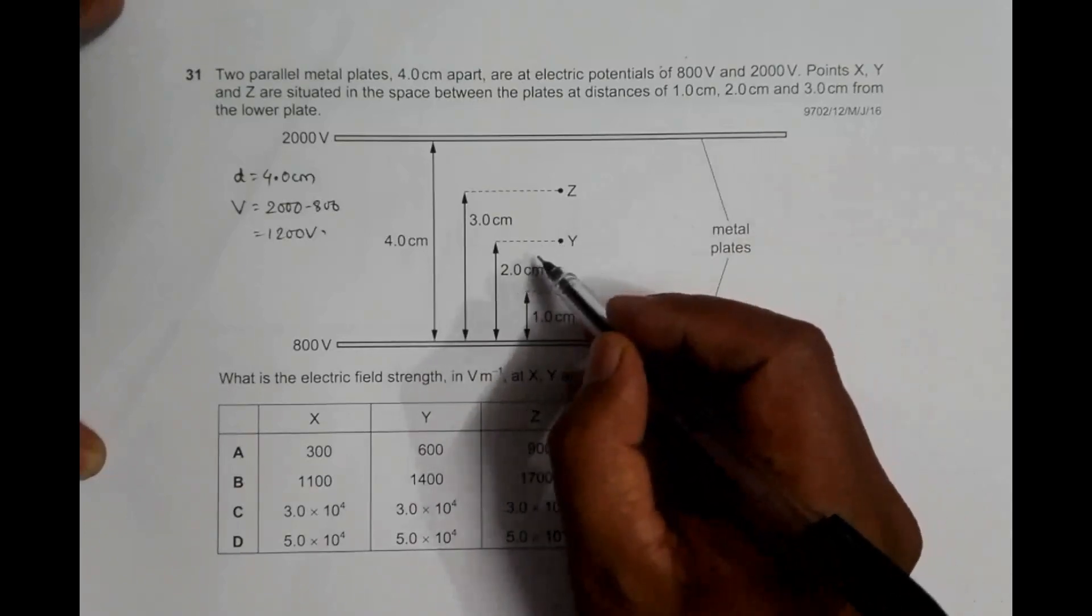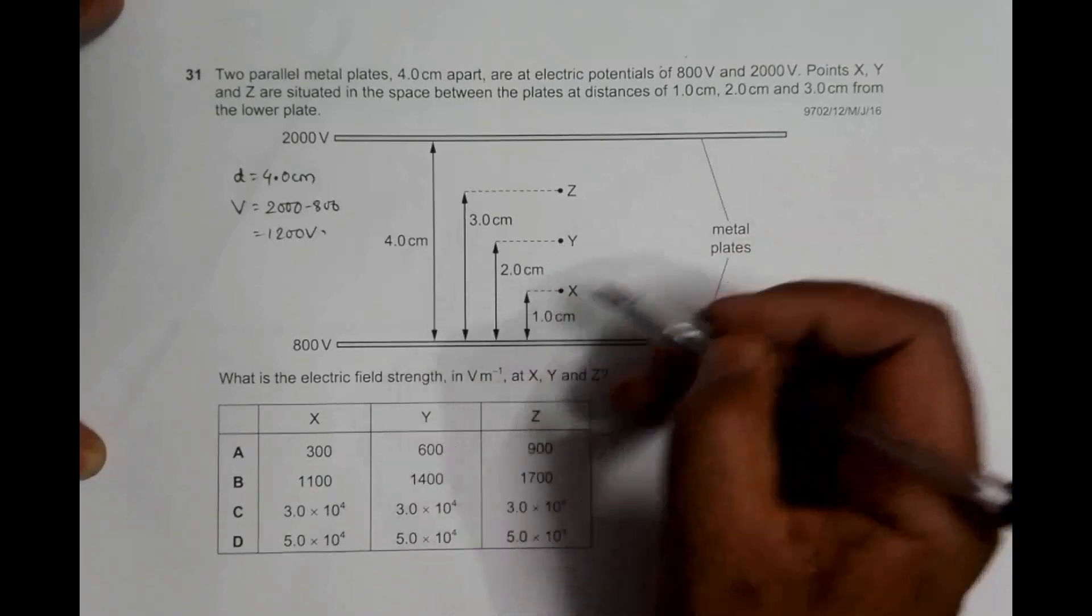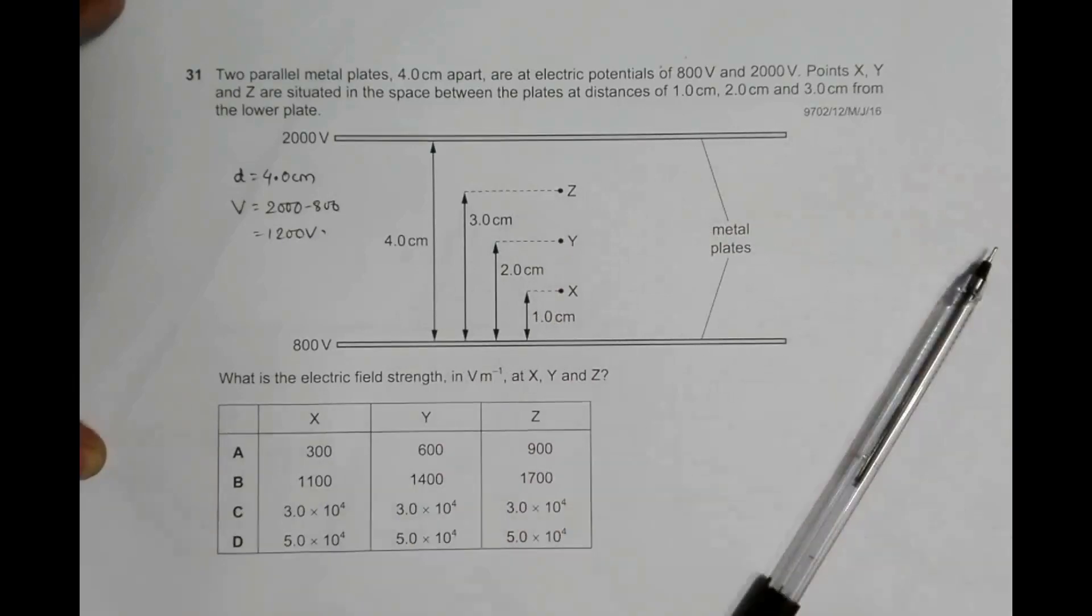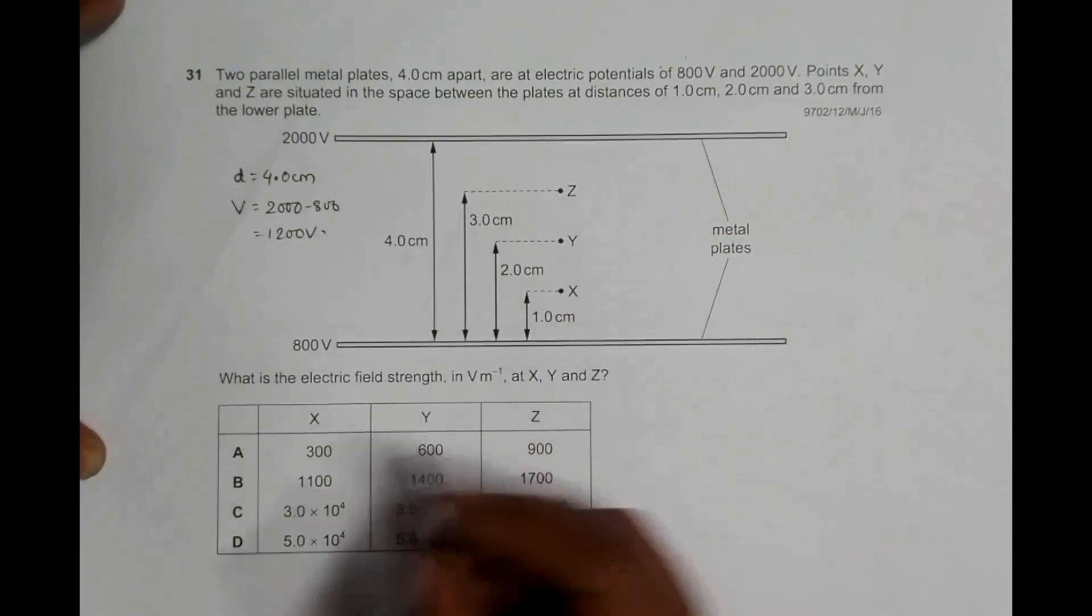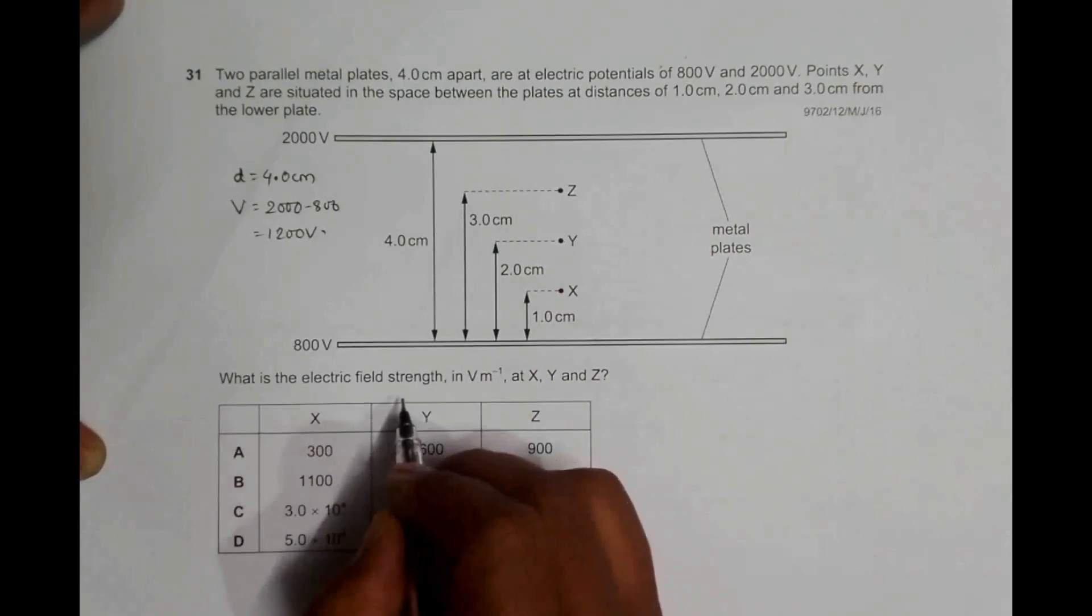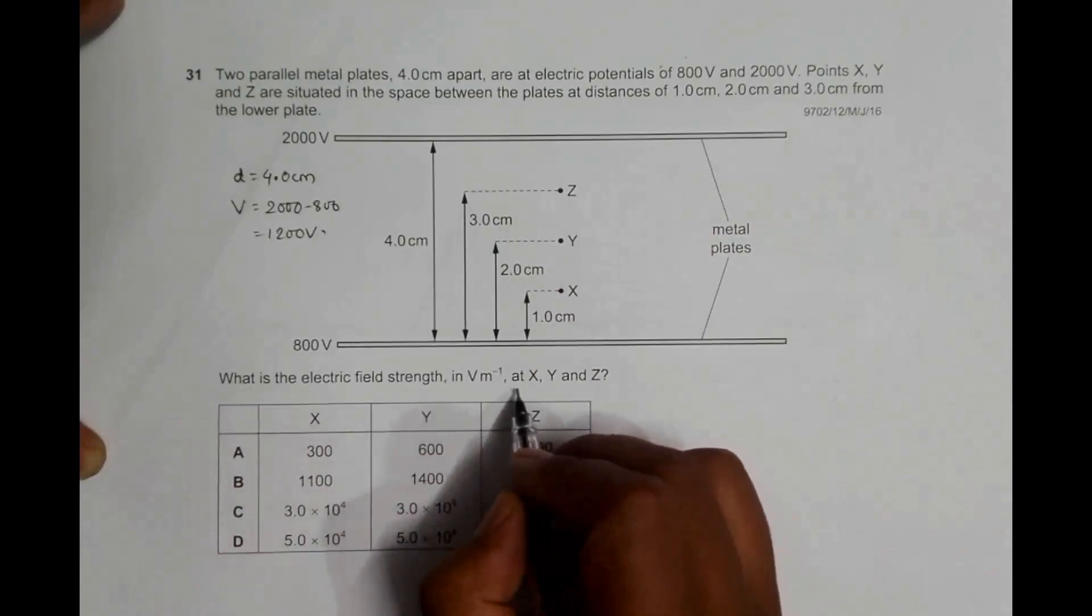Y is at 2 centimeters from the 800 volt plate, and Z is at 3 centimeters from the 800 volt plate. So we have to find what is the electric field strength in volts per meter at X, Y, and Z.